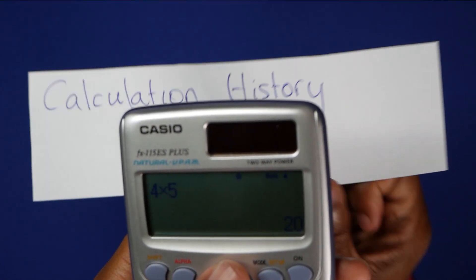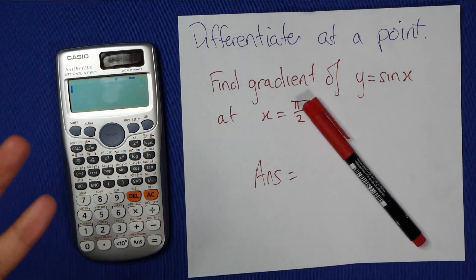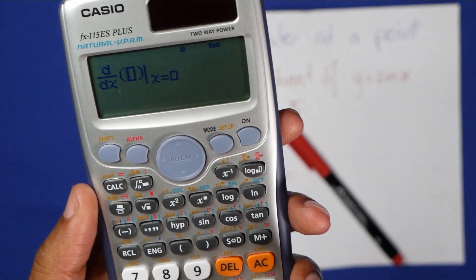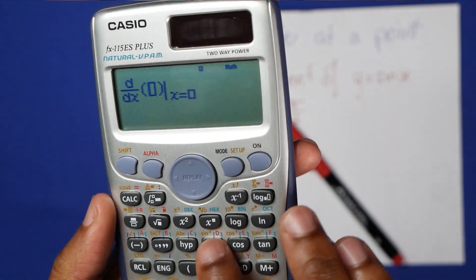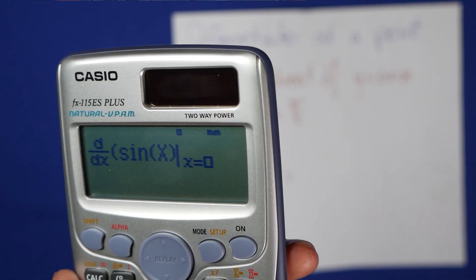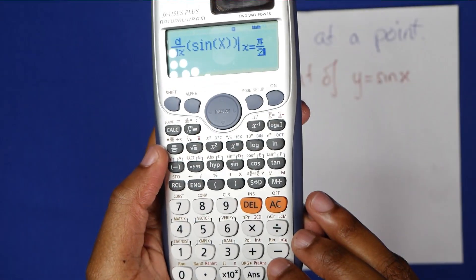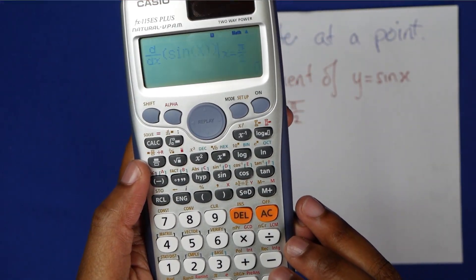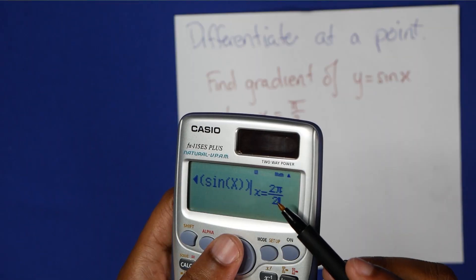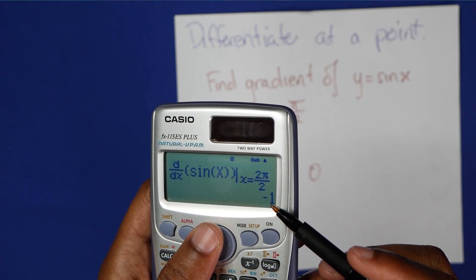Calculation history. We got you, bro. Differentiation. No problem! Put in your function. Put in your x value. In this case, we're dealing with radians. And ZOOP. Answer is zero. Change your x-value and get a new answer.